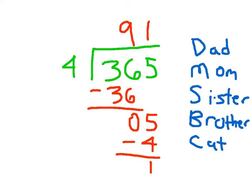Looking at this problem, we couldn't divide 3 into 4 parts, but we could divide 36 into 4 parts — those 36 tens into 4 parts. So the dad says to divide: 36 divided by 4 is 9. We put the 9 directly above that 6 because we were dividing 36 tens, and this will be the tens part of our answer.